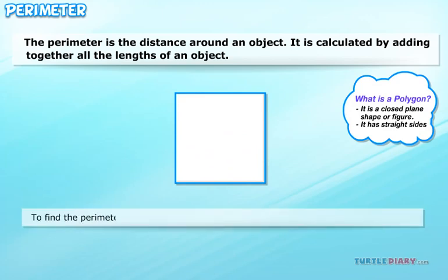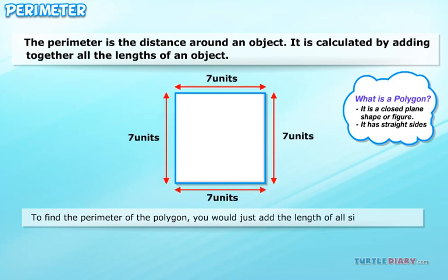To find the perimeter of the polygon, you would just add the length of all sides together.